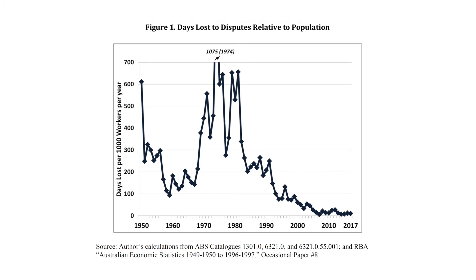As you can see in this graph, days lost to industrial disputes in Australia has fallen over recent decades. This could be attributed to centralized efforts, such as legislated safety nets from the Fair Work Act, as well as guidelines and intervention from the Fair Work Commission to reduce and shorten disputes. On the other hand, the reduction in disputes could also be attributed to a decentralization movement, leading to workers not relying on these safety nets.